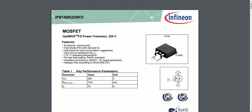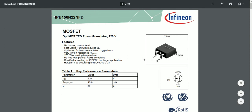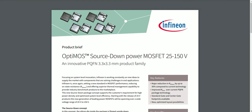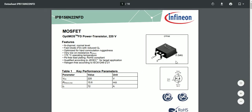One innovation Infineon has introduced recently is what they call their Optimus series — specifically a source-down power MOSFET. In the previous drain-down configuration, the drain is at the bottom with a bigger pad as the main thermal path.